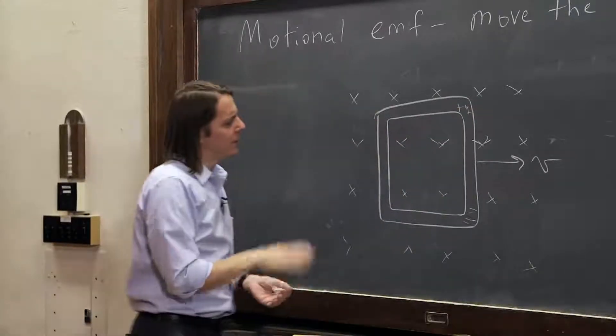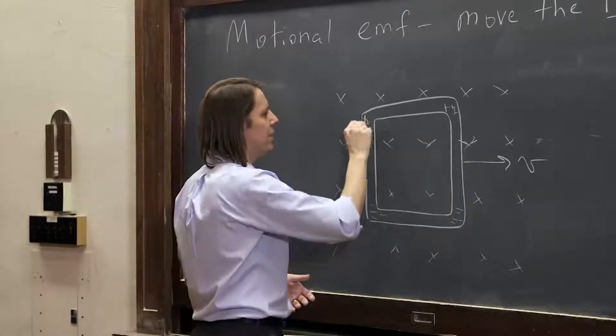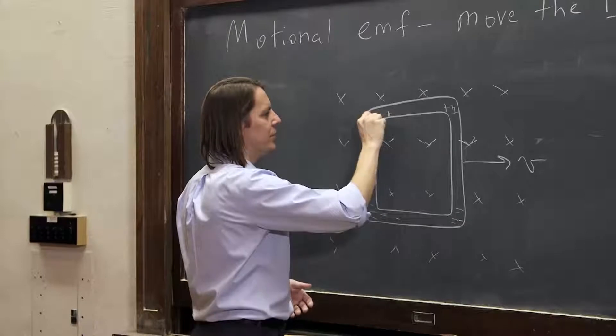And what happens over here? V cross B is up, but the electrons, they go down. Negative flows down here, positive up here, negative down here, positive up here.